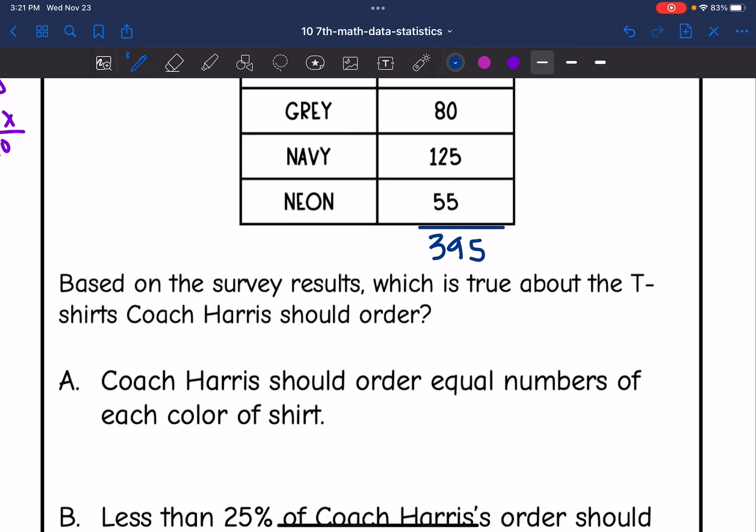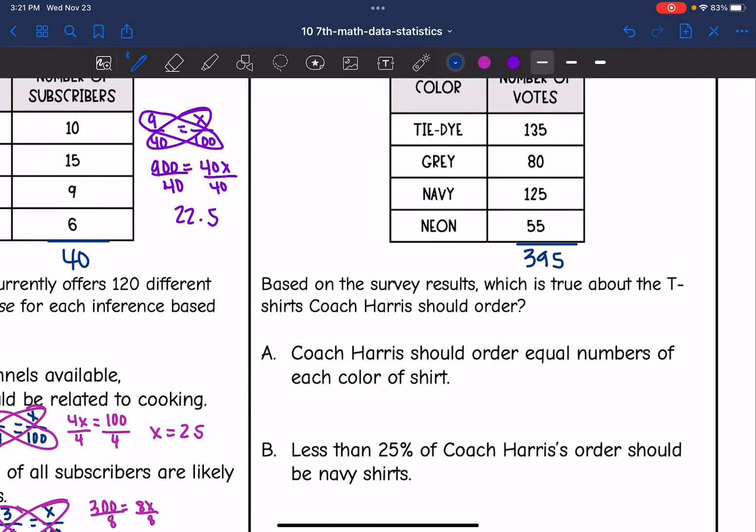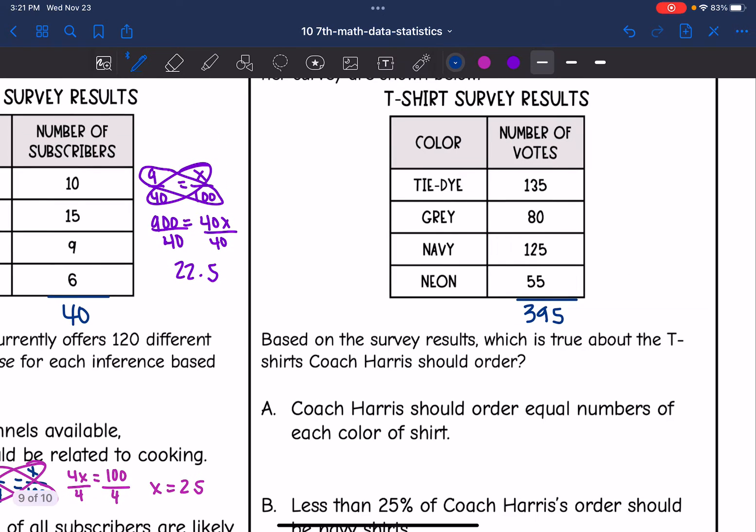So A says Coach Harris should order equal numbers of each color of shirt. I would say false on that one. Neon was 55. Tie-dye was more than twice that. So that would not be a good idea based on people's preferences.